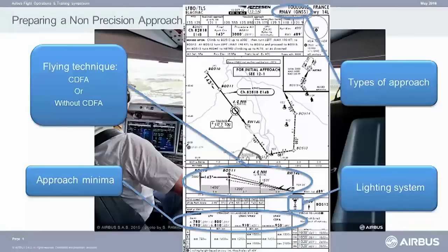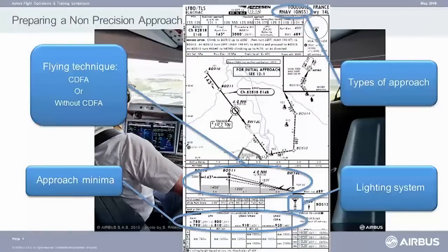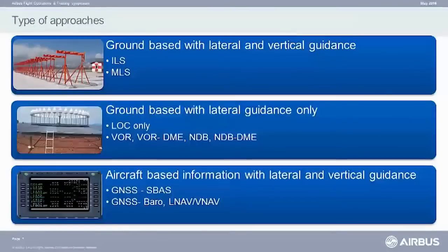And last but not least, we're going to discuss a little bit the runway lighting. Runway lighting is important in approaches. As Julien said, we have different types of approaches. We have information coming from the ground — ground-based information with lateral and vertical guidance, which are basically the ILS or the MLS.